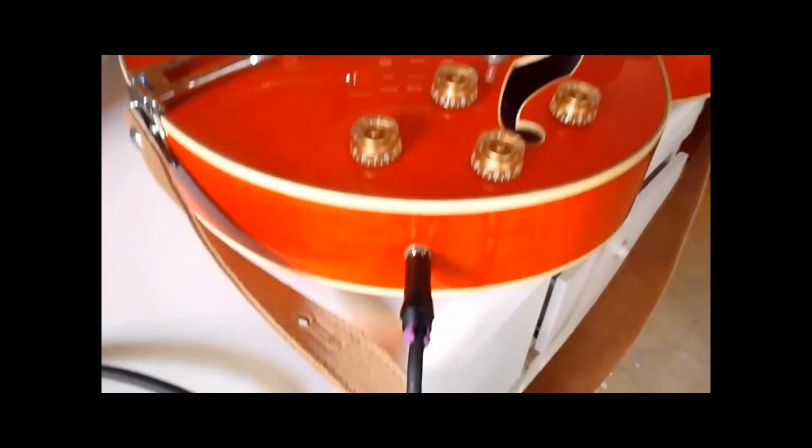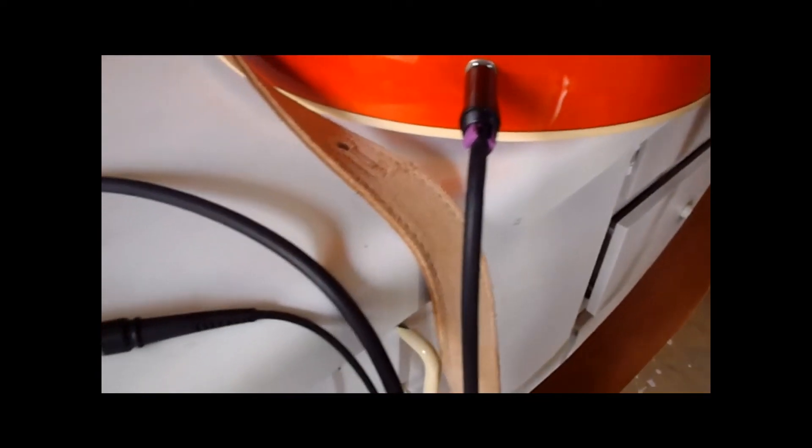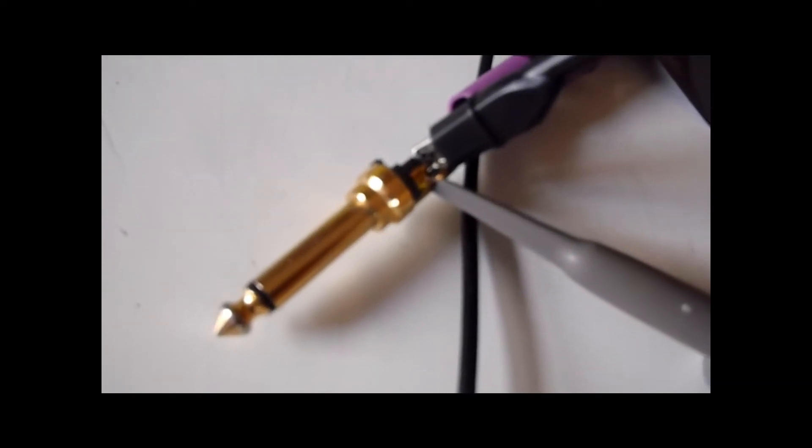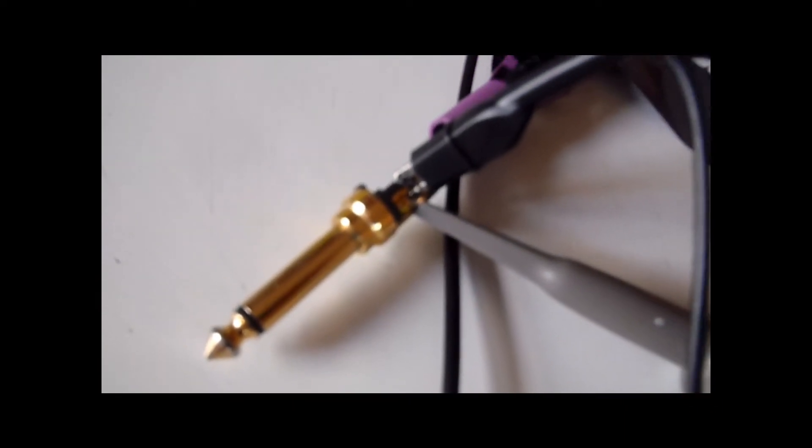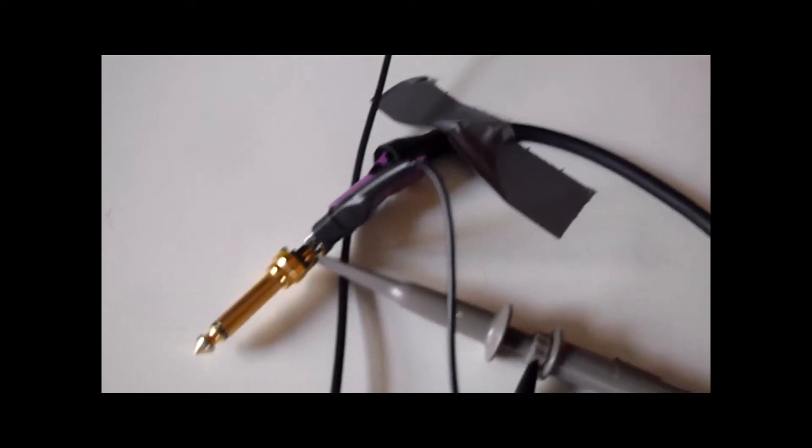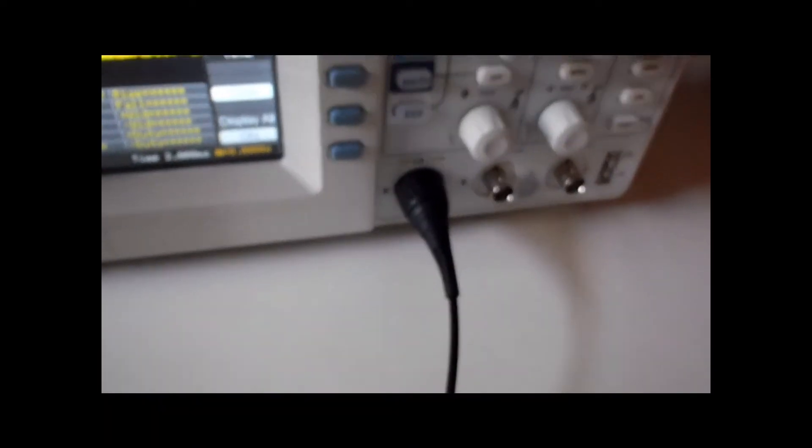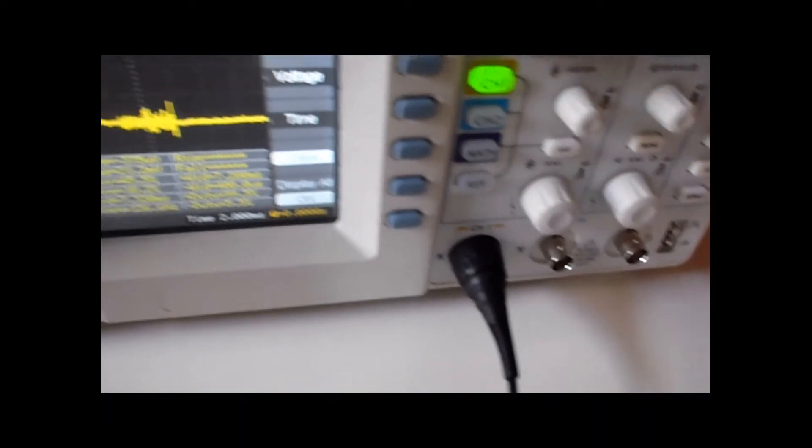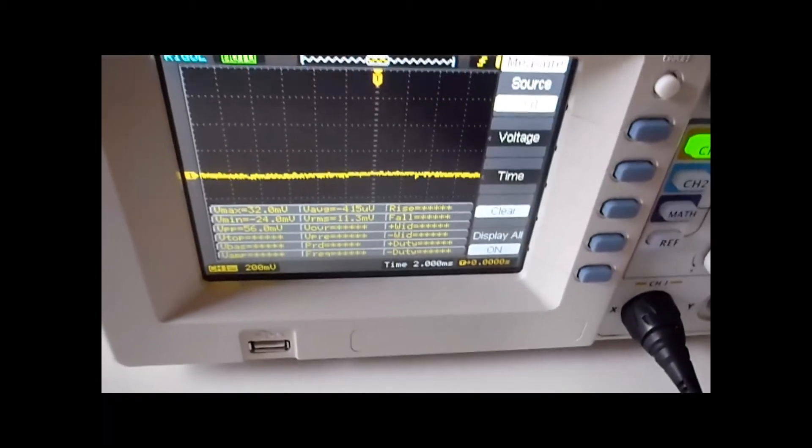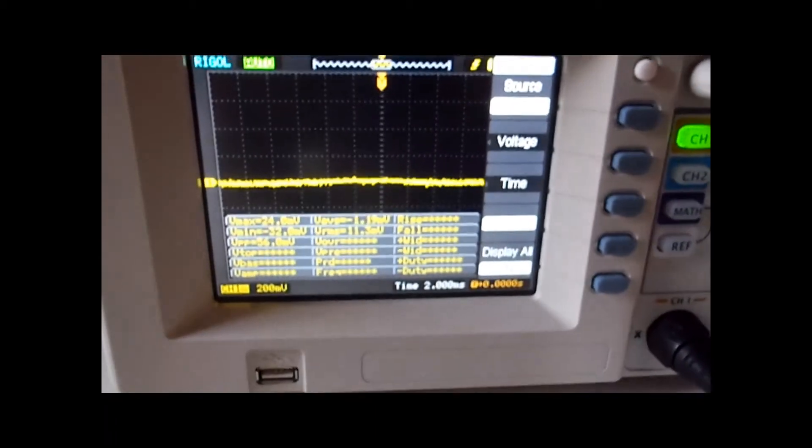Right now I'm just going to be going over how I captured the sound waves of the guitar. As you can see, it's coming from an Ibanez Artcore into a patch cord. I took apart the patch cord here and attached the oscilloscope probes onto the ground and the reference voltage for the output of the guitar. As you can see, it just goes into my Rigol oscilloscope.